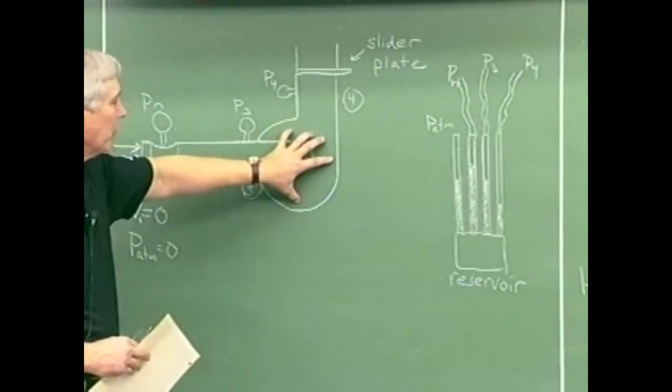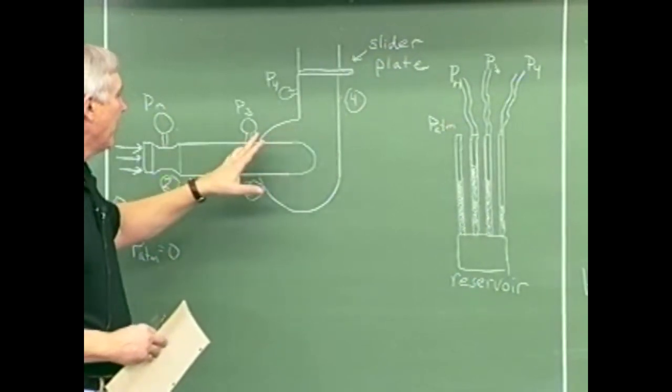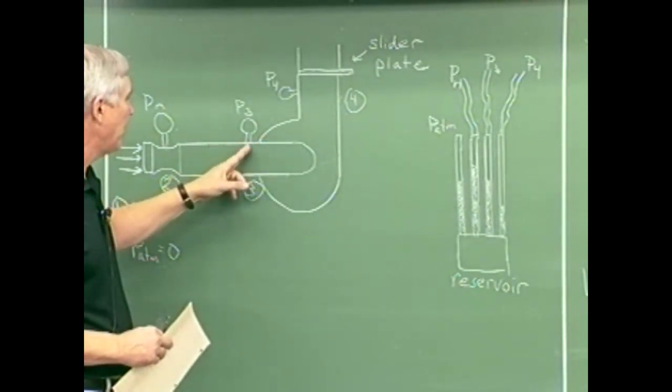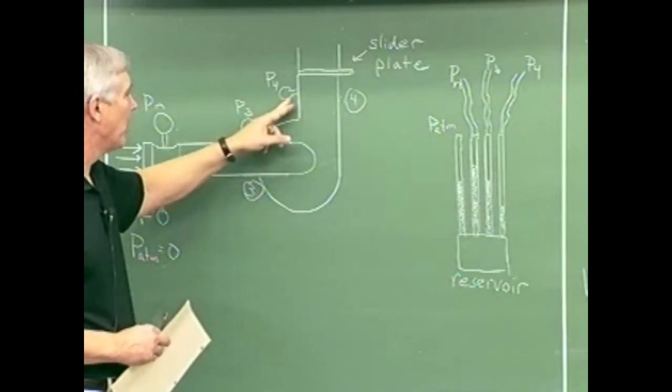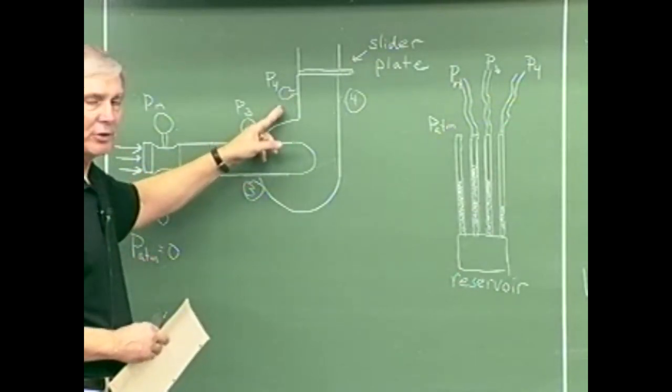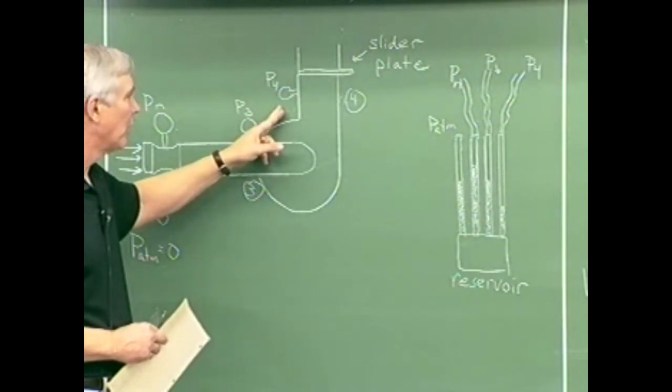This would be the centrifugal fan here. We have a pressure tap located here at P3 and we have one here located at P4. We measure the difference between these two pressures and that gives us the pressure rise over the fan.